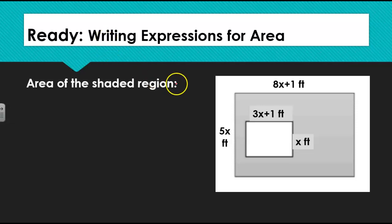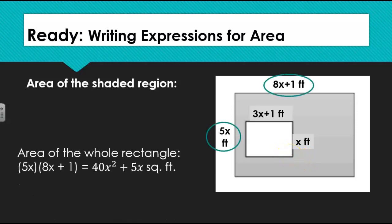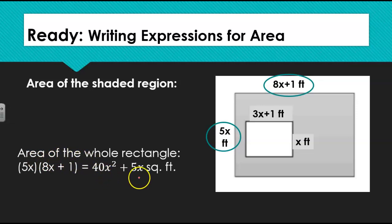In order to find the area of just the shaded portion, we are going to need to find the entire area of the larger rectangle and subtract out the area of the smaller rectangle. The area of the larger rectangle is found by multiplying the length by the width. We first need to distribute the 5x to each of the terms inside the parentheses, and we are left with 40x squared plus 5x square feet.